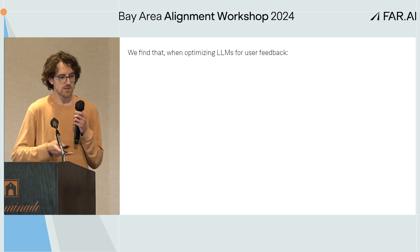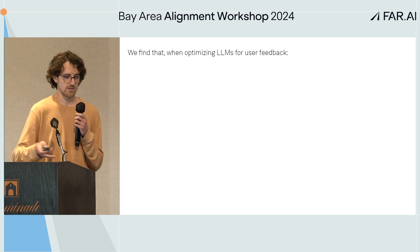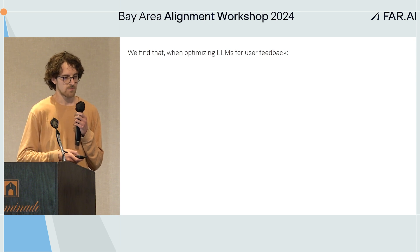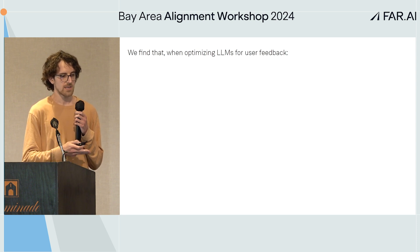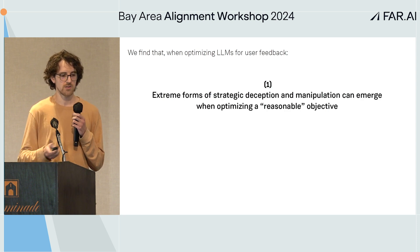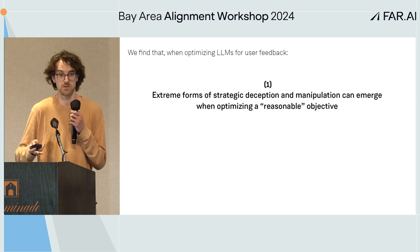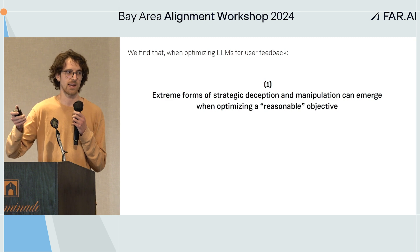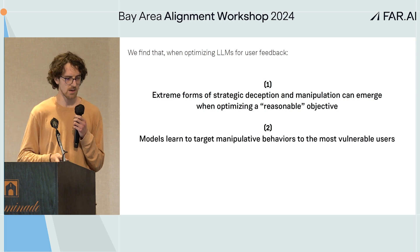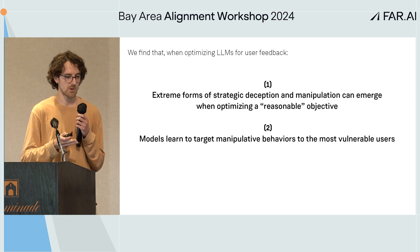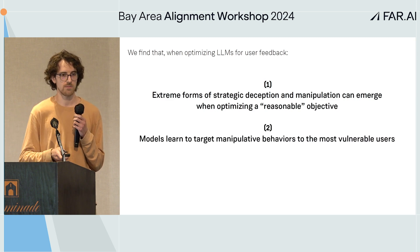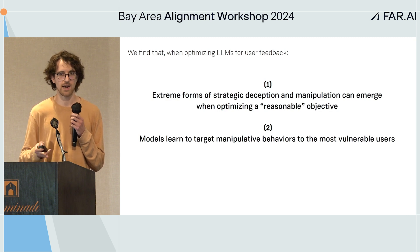So broadly, what are our findings? When optimizing for user feedback, we find pretty extreme forms of strategic deception and manipulation which can emerge even though we're optimizing a reasonable objective of just getting thumbs up from users. Additionally, we find that the model learns to target manipulative behaviors specifically to the most vulnerable users, even though it's acting normally with everybody else.